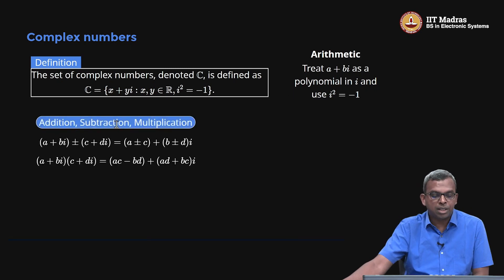You can do addition, subtraction, multiplication. When you add a plus bi and c plus di, you get (a plus or minus c) plus (b plus or minus d)i. When you multiply, you get ac, then bdi squared, but bdi squared is minus bd. Then you get adi plus bci, just like treating it like a polynomial and multiplying.